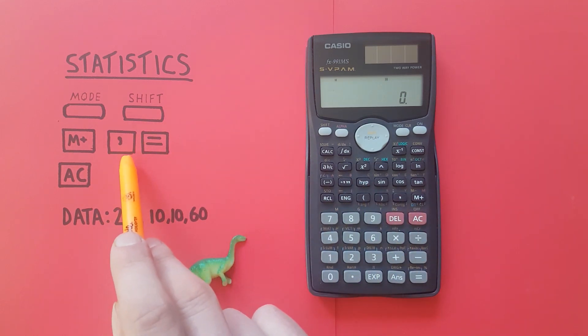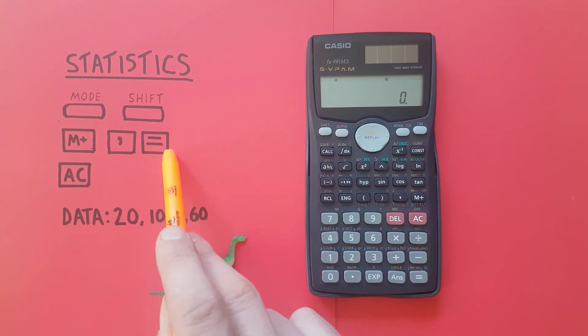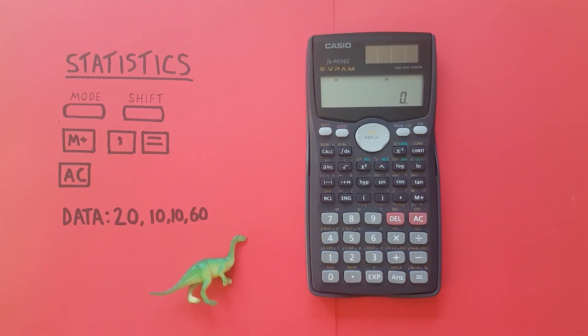The comma key is located here. The equals key looks like this and is down here, and the AC key is right here.